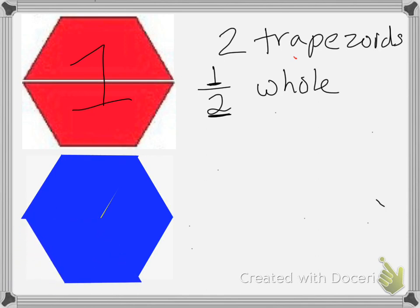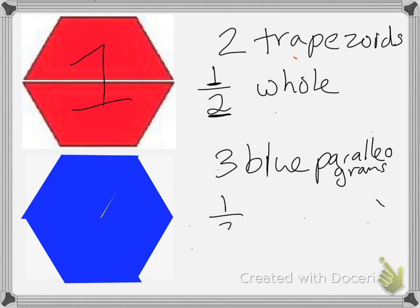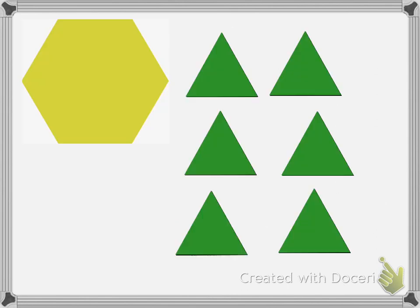So it takes three blue parallelograms to fill in one whole. So one blue parallelogram is going to be 1/3 of the whole, because it takes three pieces to make up the whole shape.